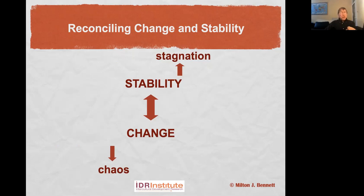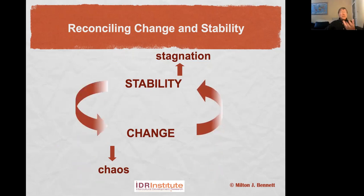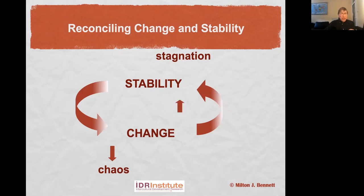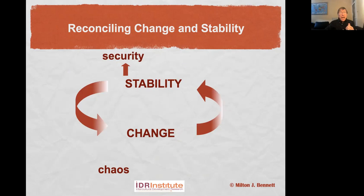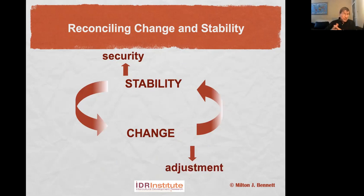The solution is to put these things into a dialectic — to reconcile them, to see them as operating together rather than against one another. Every time you think about change, ask: how will that generate new stability? Every time you think about stability, ask: how will that allow inevitable change? When we're able to do that, stability is more likely to become the security we basically need, and change is more likely to become the kind of adjustment we inevitably need to make, since things in fact do not stay the same.